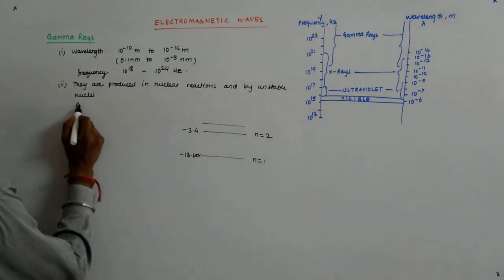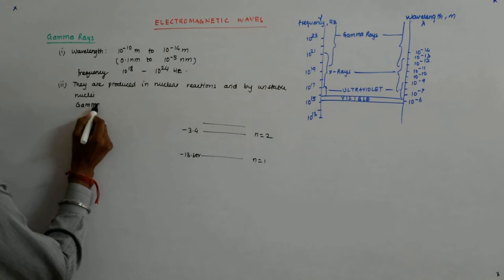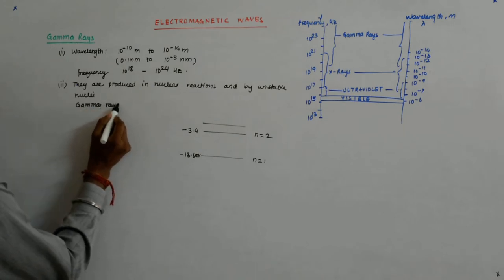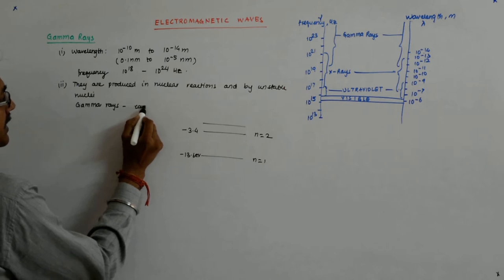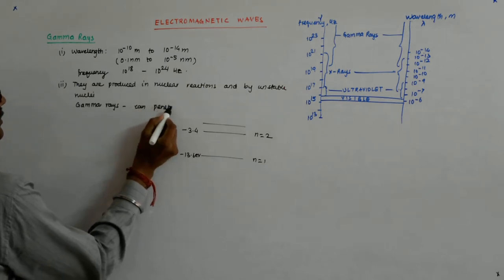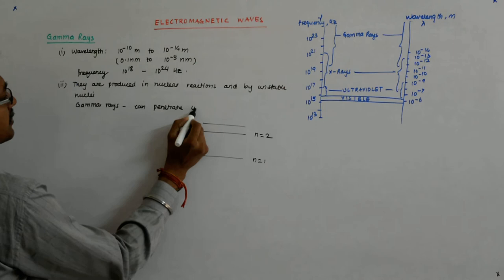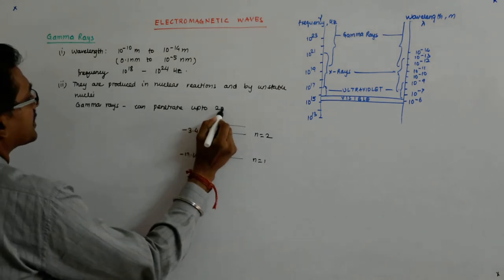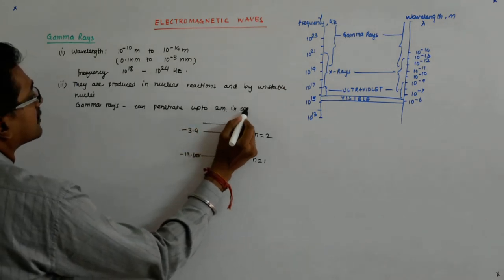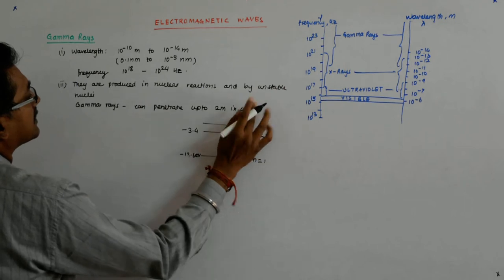And there is a peculiar thing about gamma rays, they can penetrate up to 2 meters in concrete. Can penetrate up to 2 meters in concrete. So that energetic.